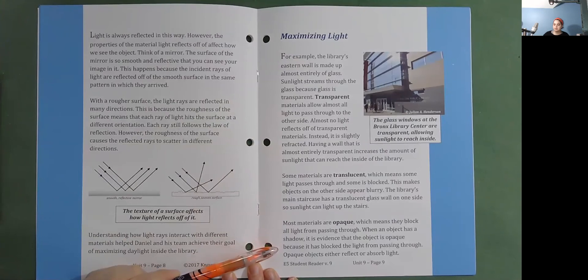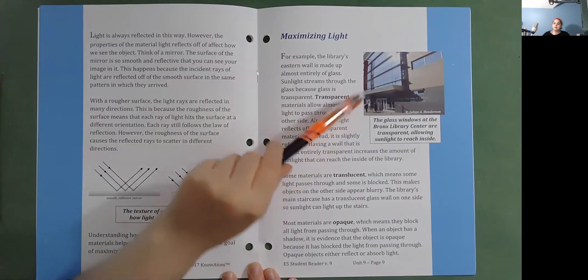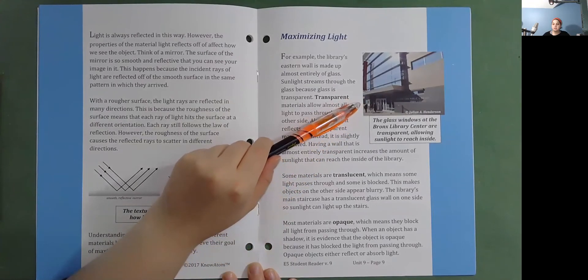Opaque objects either reflect or absorb light. The glass windows at the Bronx Library Center are transparent, allowing sunlight to reach inside.